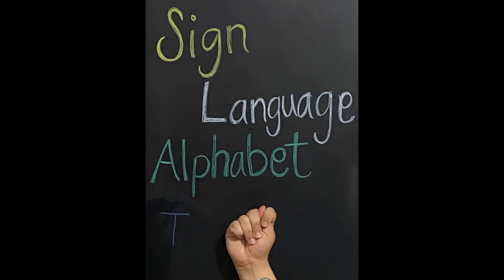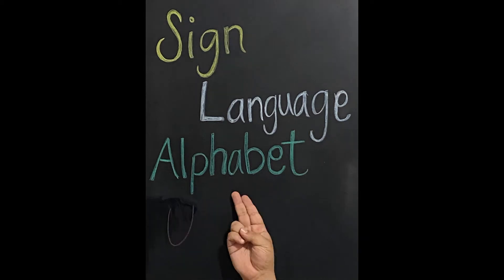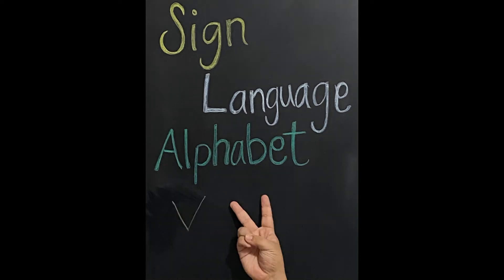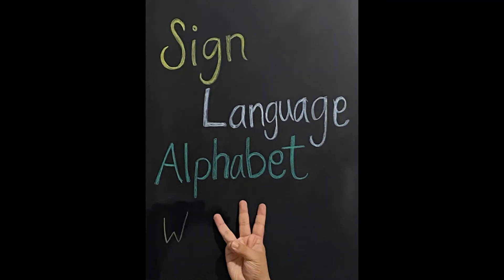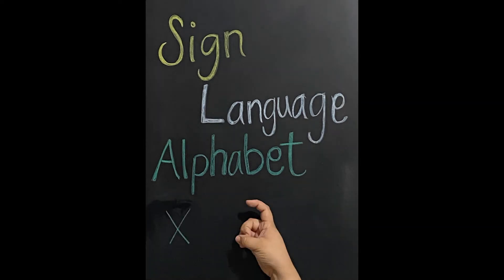T is a fist with your thumb between your middle finger and your index finger. U is like a peace sign but instead you're going to have your fingers together. V is actually going to be just a peace sign. For W, we're just going to have our ring finger, middle finger, and index finger all up. For X, we're just going to have our index finger up but it's going to be like a little hook.